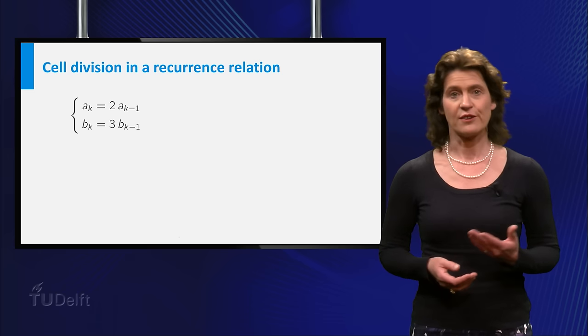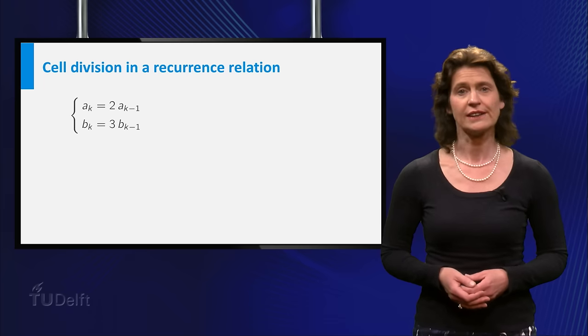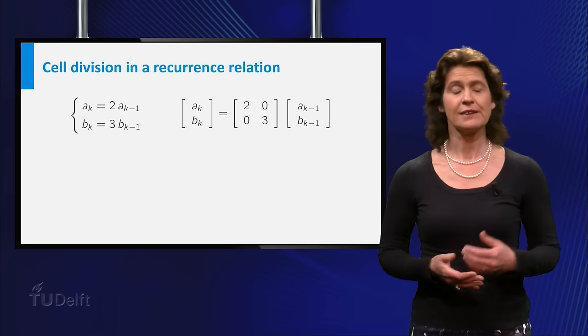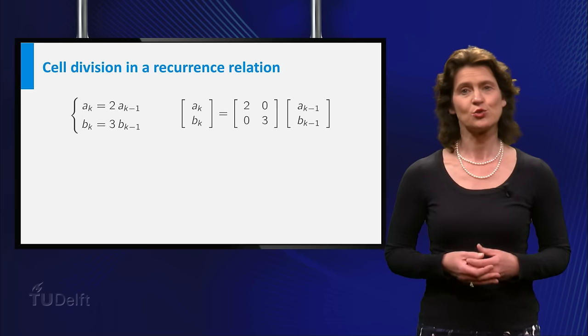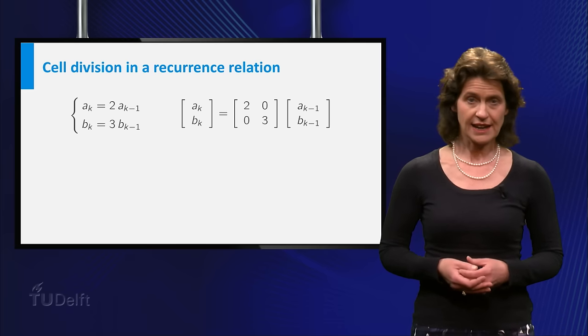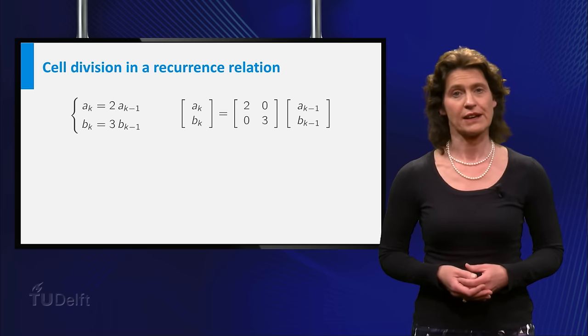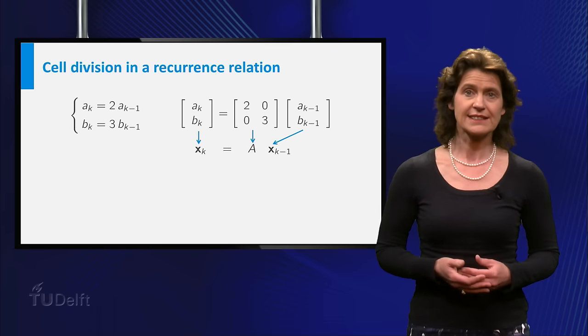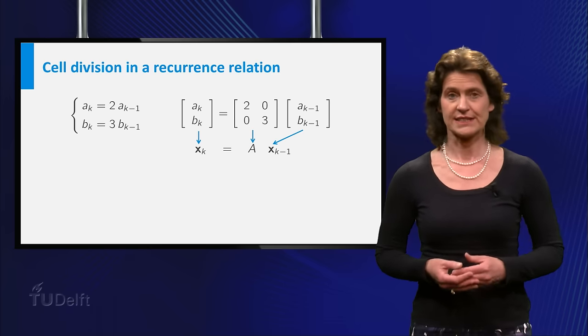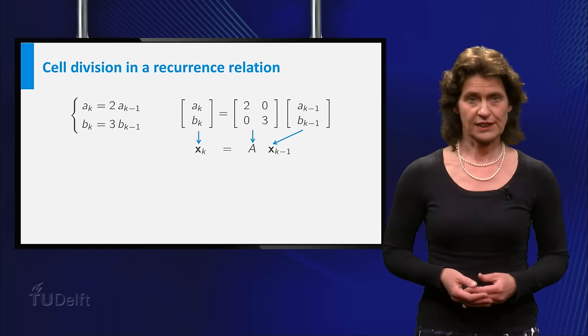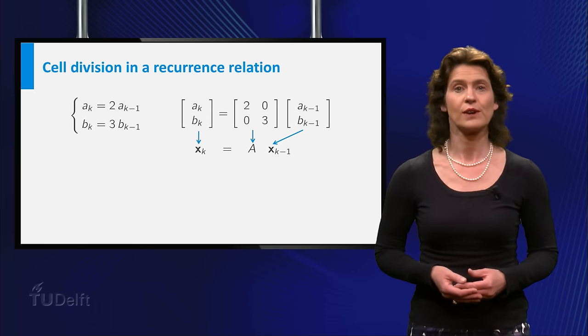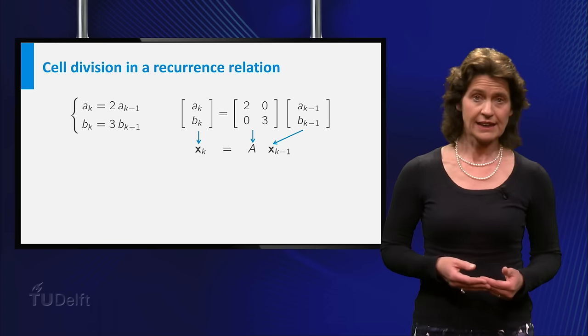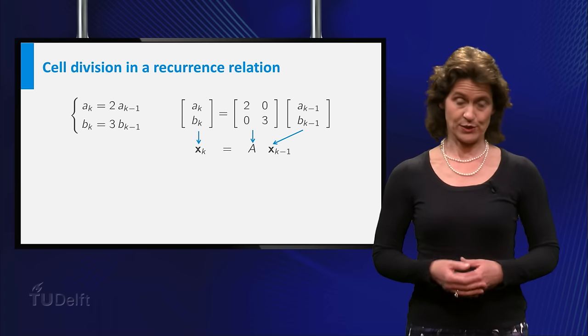Using a matrix and vectors you can rewrite the recurrence relation like this. The vector ak, bk is equal to the matrix 2, 0, 0, 3 times the vector ak-1, bk-1. Or even shorter as xk equals the matrix A multiplied by the vector xk-1 where the vector xk has components ak and bk and you can see that A is a diagonal matrix.